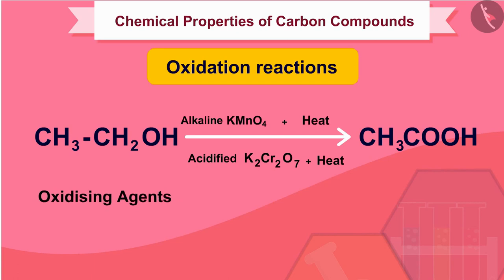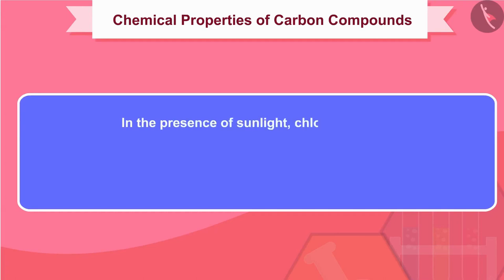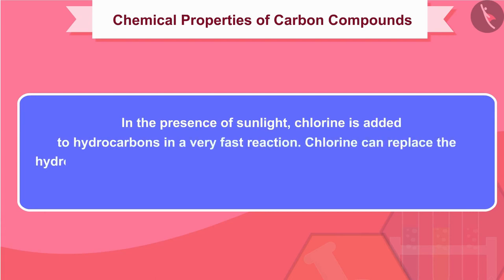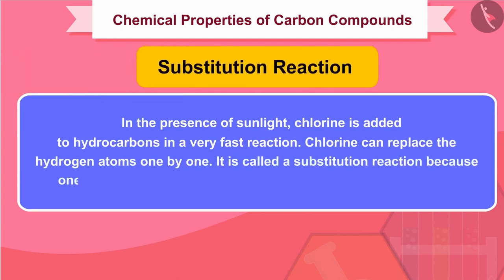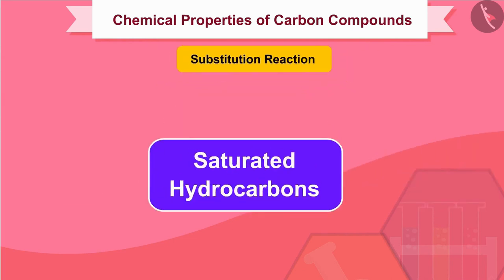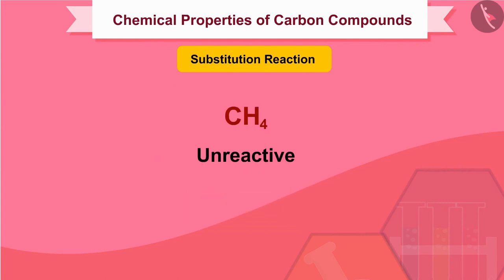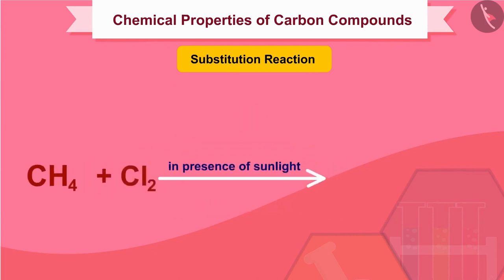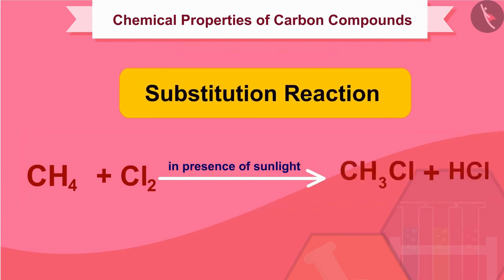In the presence of sunlight, chlorine is added to hydrocarbons in a very fast reaction. Chlorine can replace the hydrogen atoms one by one. It is called a substitution reaction because one type of atom or a group of atoms takes the place of another. Saturated hydrocarbons are quite unreactive and do not react with many substances, but they undergo substitution with chlorine in the presence of sunlight. Since this substitution is carried out by chlorine, it is called chlorination.